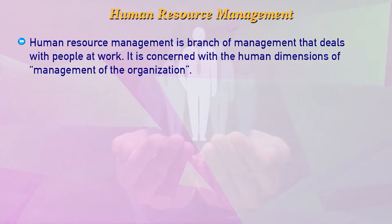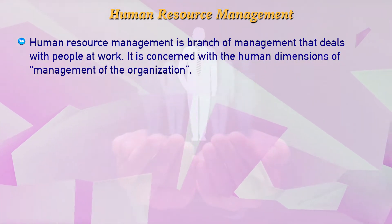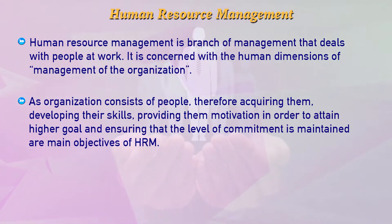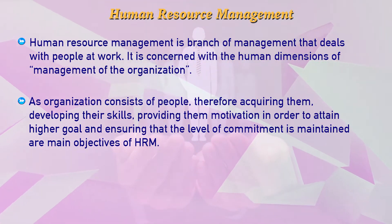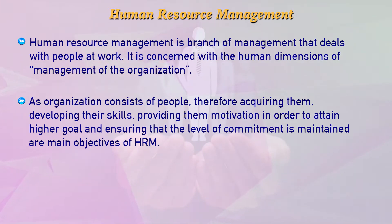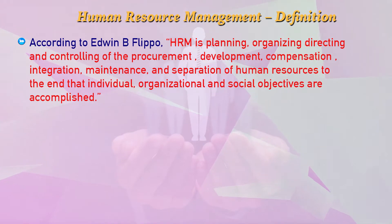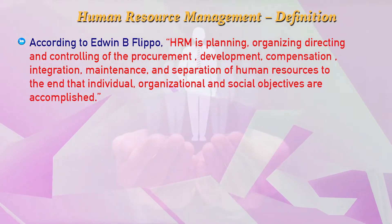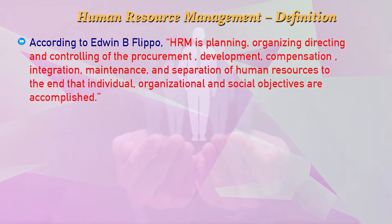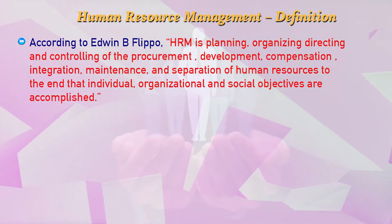Human resource management is the branch of management that deals with people at work. It is concerned with the human dimension of management of the organization. As an organization consists of people, acquiring them, developing their skills, providing them motivation to attain higher goals, and ensuring their level of commitment is maintained are the main objectives of HRM. The definition of HRM is: planning, organizing, directing, and controlling of the procurement, development, compensation, integration, maintenance, and separation of human resources.